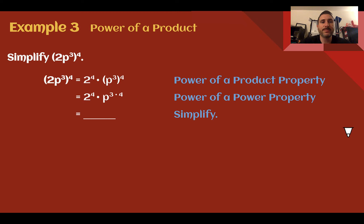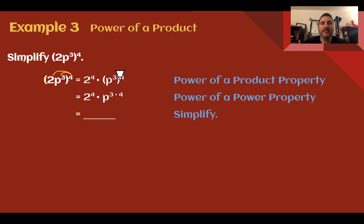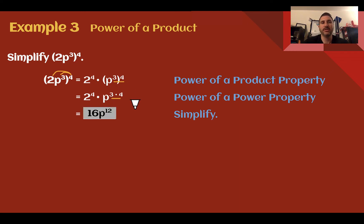Example 3, power of a product: Simplify 2p to the 3rd, all to the 4th power. We distribute the exponent outside to each part inside: 2 to the 4th power, and p to the 3rd to the 4th using power of a power, so p to the 3 times 4. Simplified: 2 to the 4th is 16, p to the 12th. So 2p to the 3rd raised to the 4th equals 16p to the 12th.